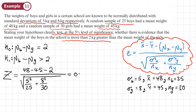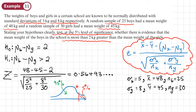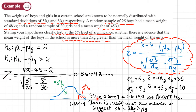Working this out gives 1 at the top divided by the denominator, which gives Z = 0.5649. Testing at the five percent level with an upper tail test, the critical value is 1.6449. Since our test statistic 0.5649 is less than 1.6449, we accept H0. There is insufficient evidence to suggest that the mean weight of the boys is 2 kg greater than the mean weight of the girls.